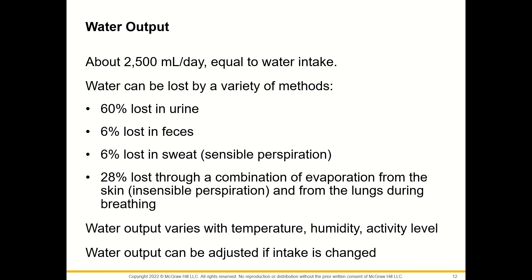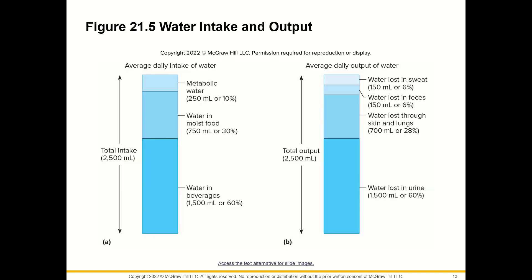Water output should also be about 2,500 mL a day, equal to water intake. Water can be lost by a variety of methods: 60% is lost in urine, 6% in feces, 6% in sweat as sensible perspiration, and 28% through a combination of evaporation from skin, insensible perspiration, and from the lungs during breathing. Water output varies with temperature, humidity, and activity level, and can be adjusted if intake is changed.